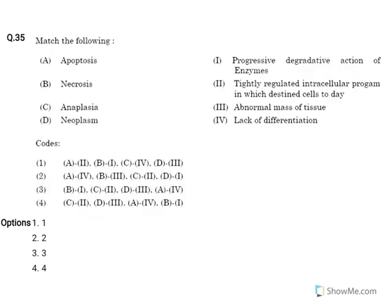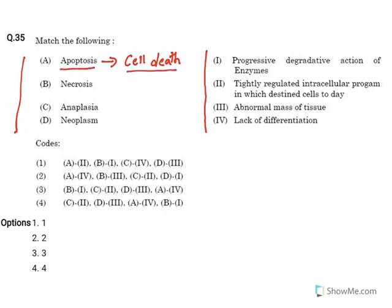Let's get into the class. There are a couple of match-the-following type questions which are easy to answer. You have one column with certain terms and the meaning of the terms in another column. Apoptosis is a kind of programmed cell death — when a cell is infected with a virus or gets irreversible damage, it undergoes programmed cell death.